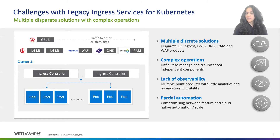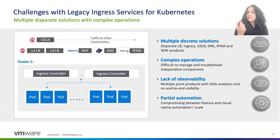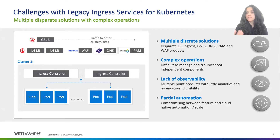Let's discuss some of the key challenges with ingress services for Kubernetes. Today, platform teams have to stitch together disparate functions such as layer four load balancers, layer seven ingress, DNS IPAM to connect to external services, GSLB for multi-site multi-cluster connectivity, and WAF to secure the ingress. Customers have a choice of cobbling up a solution using point products.